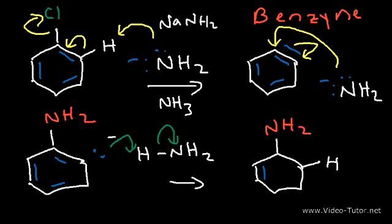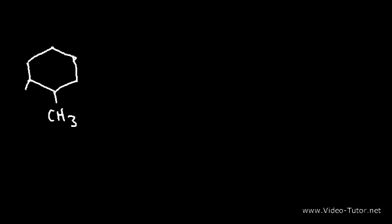Remember, any time you're dealing with the benzyne reaction, you can't have any powerful electron-withdrawing groups. You can have electron-donating groups like a methyl group or an isopropyl group, but if there are any strong electron-withdrawing groups, then the reaction proceeds via the Meisenheimer complex, which is an addition-elimination reaction: in the first step you add the nucleophile, and in the second step you remove the leaving group. With the benzyne reaction, it's an elimination-addition reaction — you remove the leaving group first, and then you add the nucleophile later.